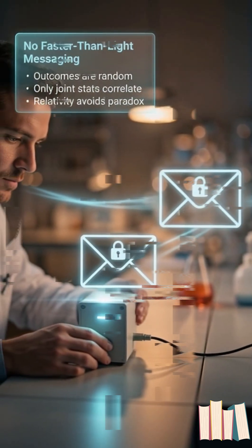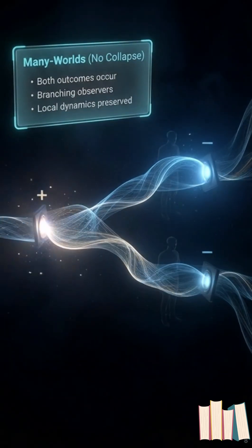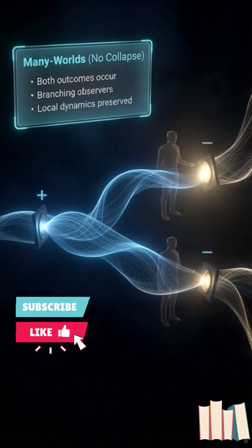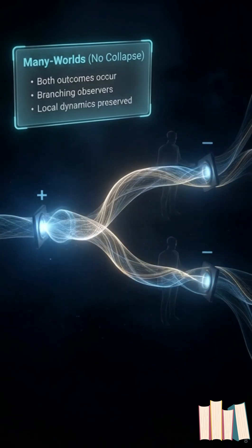And if you want a mind-bending escape hatch, many worlds. Removes collapse entirely. No instant updating, just branching outcomes.